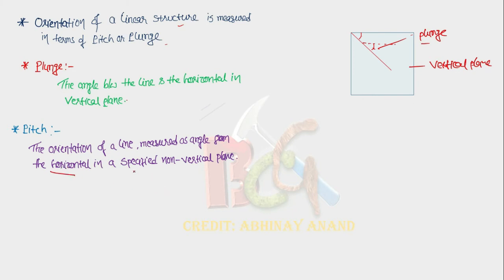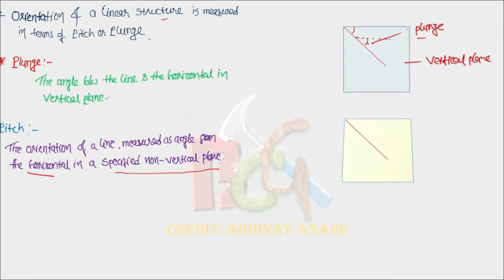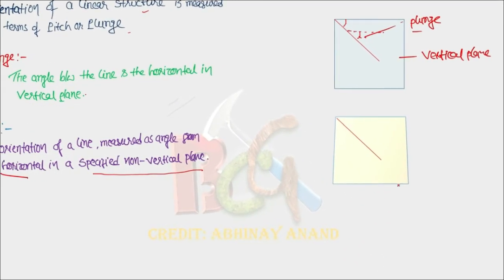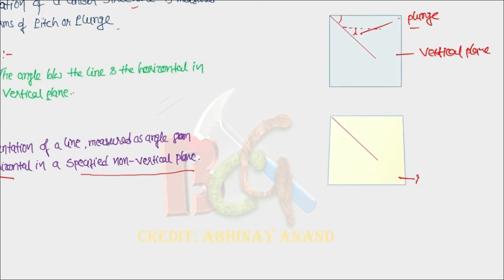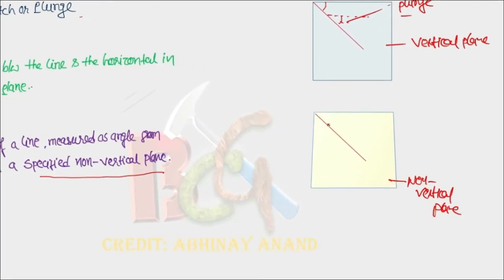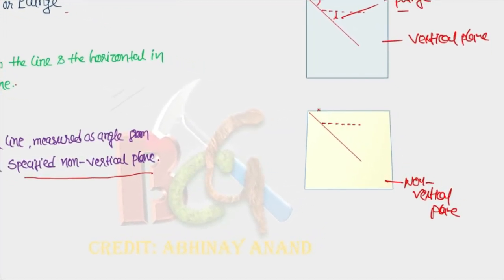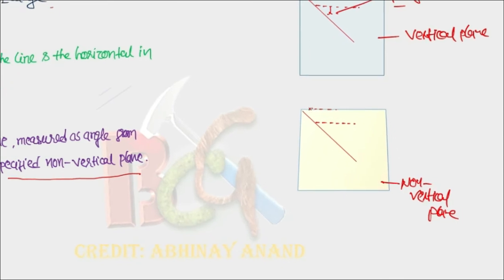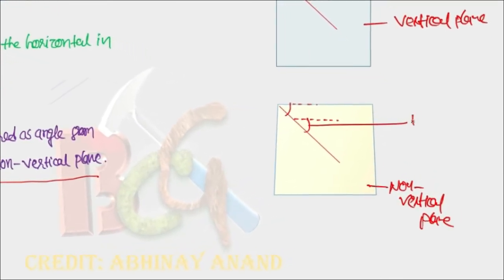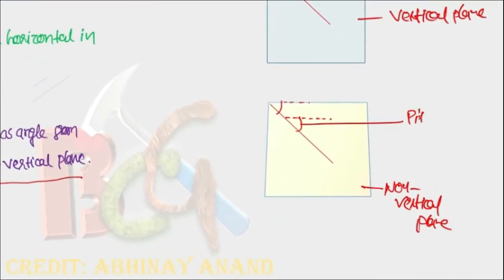The horizontal structure is measured in a specified non-vertical plane. If we measure the line in a non-vertical plane, this angle is the pitch. The difference is: plunge is measured in a vertical plane, and pitch is measured in a specified non-vertical plane.